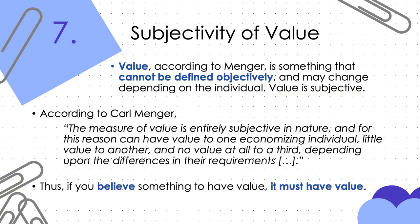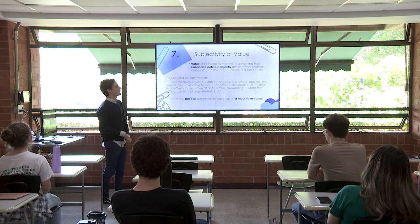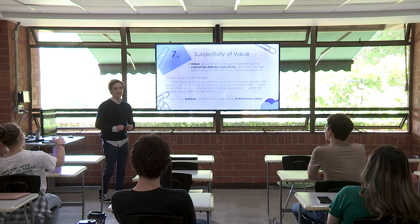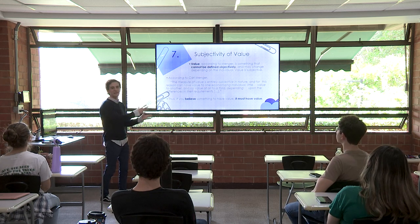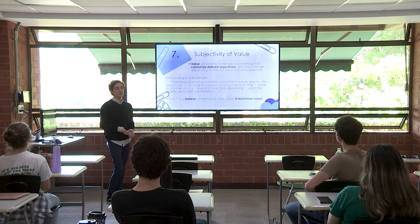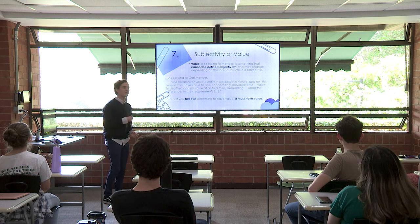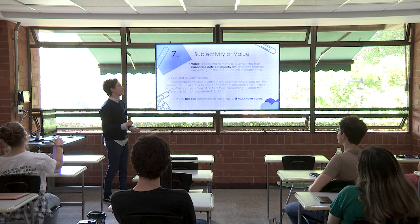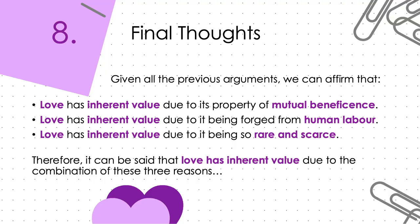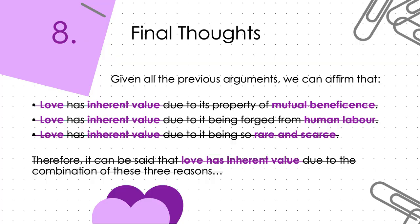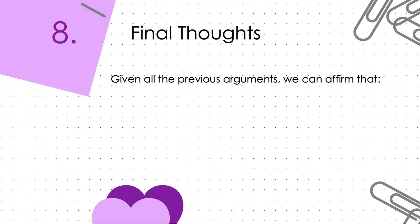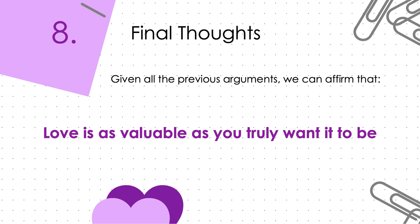How do we fix this? Menger, with the subjectivity of value, assures us that it's okay. Just as long as you want something to be valuable and you believe it to be valuable in your heart of hearts, then it can have value that is different from everything else put into it. It can even be worth more than what you've put into it — and if you want it to be, it can be. So some final thoughts: we have learned that the previous arguments are actually all wrong and don't work out logically. But love is a valuable thing, and it is as valuable as you truly want it to be. Thank you.